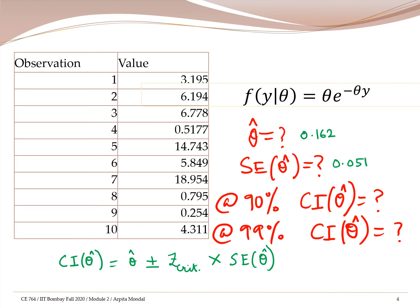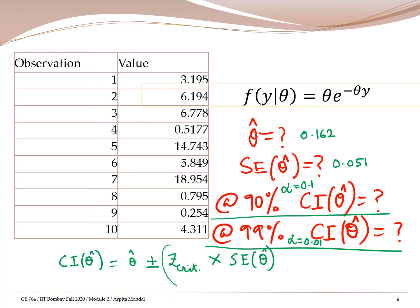At 90% confidence, this means 100×(1−alpha) = 0.9, so alpha is 0.1. At 99% confidence, alpha equals 0.01. We will refer to the standard normal tables to find the Z critical corresponding to these alpha values.